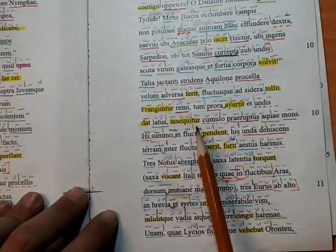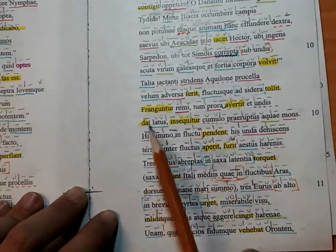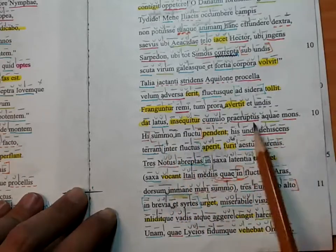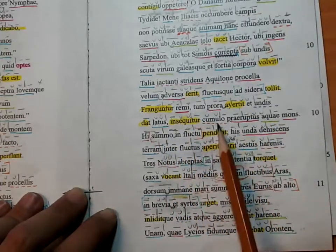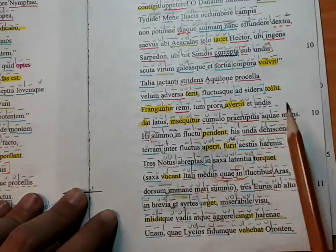The oars are broken, then the prow turns and gives the side to the waves. A steep mountain of water follows in a mass. These men hang in the highest wave.